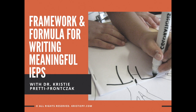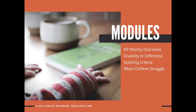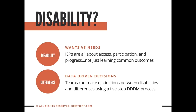Welcome to the Framework and Formula for Writing Meaningful IEPs. This is the second module on disability, and we're on the first of two lessons under this module. In module one, we covered IEP-worthy outcomes. In module two, we're talking about what's a disability or just a difference — specifically two lessons: one about wants versus needs, and the other about a data-driven decision-making process.